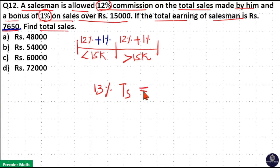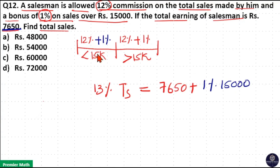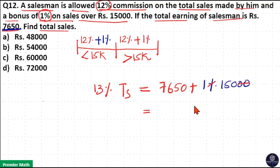So: 13% commission on total sales = ₹7,650 + 1% of ₹15,000. The 1% of ₹15,000 is included in this 13% because I added it to the less-than-₹15,000 portion. Calculating: 1% of ₹15,000 = ₹150. So ₹150 + ₹7,650 = ₹7,800. Therefore, 13% of total sales = ₹7,800.